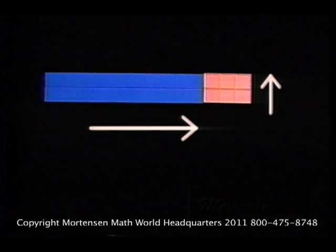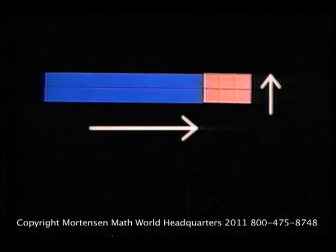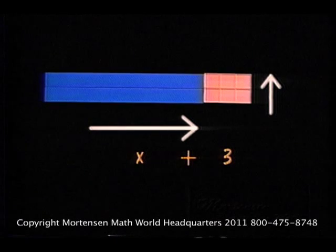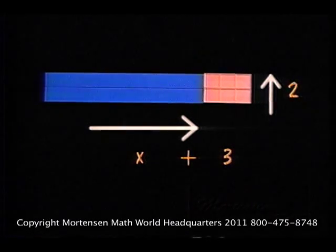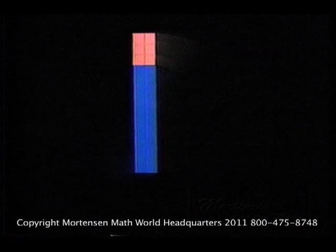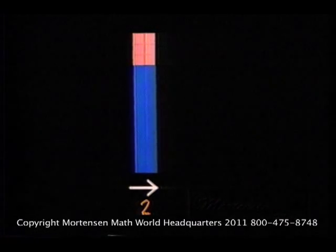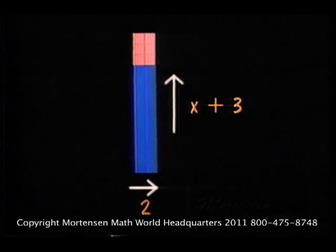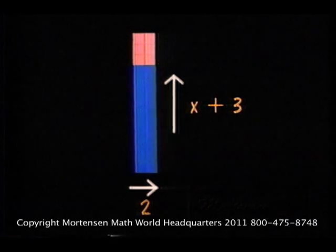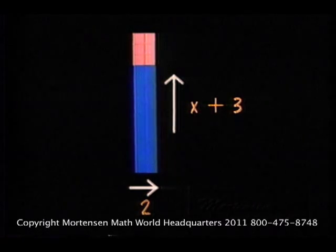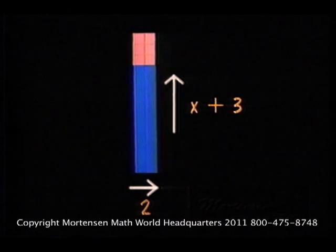If the rectangle is placed this way, the over distance would be X plus three, and the up distance would be two. If the rectangle is placed this way, the over distance would be two, and the up distance would be X plus three. There are two ways to describe a rectangle, by its total area or by its dimensions. These two edges are the factors of the rectangle.